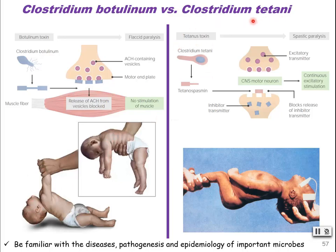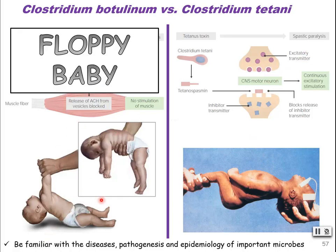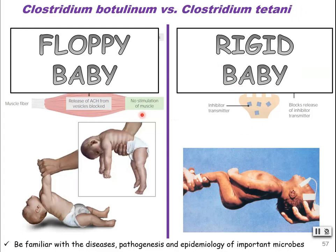In the case of Clostridium tetani, it got its name from tetany — that maximum sustained contraction. You get what's called spastic paralysis. Normally you've got muscles on one side of a limb contracting and the inhibitor muscles relaxing — excitatory stimulus and inhibitory stimulus. In tetanus, that inhibitor is blocked and you just get muscle contraction — spastic paralysis. Floppy baby syndrome is Clostridium botulinum, and when you see tetanus — rigid baby — it's Clostridium tetani. One causes muscles to not contract; the other causes muscles to have that sustained contraction.